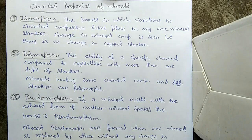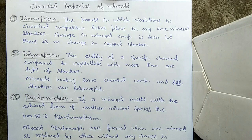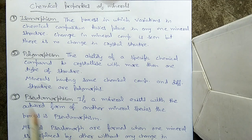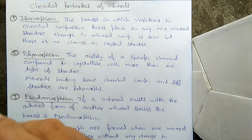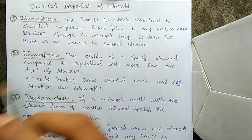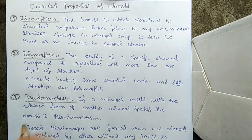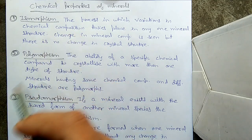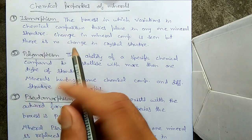Hello friends. After discussing the physical properties of minerals, we are now moving to the chemical properties of minerals. There are three important chemical properties we are going to discuss in this video: the first one is isomorphism, the second one is polymorphism, and the third is pseudomorphism.